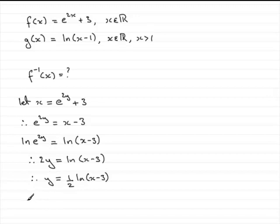What we do now is just simply replace the y with the inverse function. So therefore we have the inverse function of x is equal to a half times the natural log of x minus 3. So there we've got the inverse function.